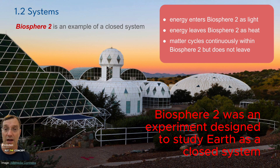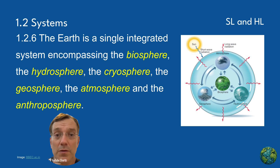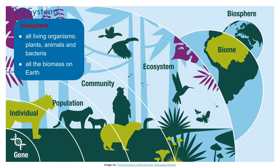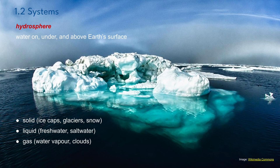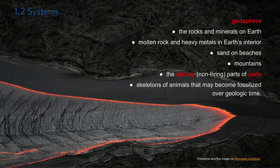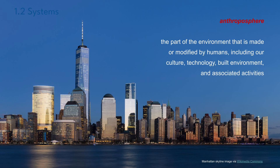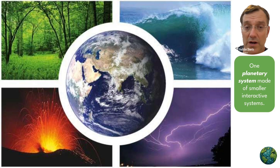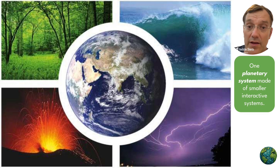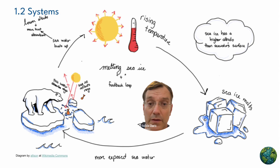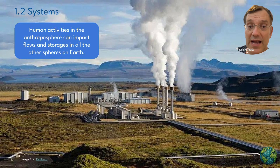Closed systems are rare in nature, but the concept is useful in understanding global cycles and designing experiments. The Earth is a remarkable example of a single integrated system encompassing several interconnected spheres: the biosphere (all living organisms), the hydrosphere (water in all its forms, including the cryosphere of snow and ice), the geosphere (rocks and soil), the atmosphere (gases surrounding our planet), and the anthroposphere (the human-made part of the environment). These spheres constantly interact — plants take up water from the hydrosphere, release water vapor into the atmosphere, and their remains may become part of the geosphere. The cryosphere reflects sunlight affecting global temperatures, and the anthroposphere increasingly impacts all other spheres through human activities.